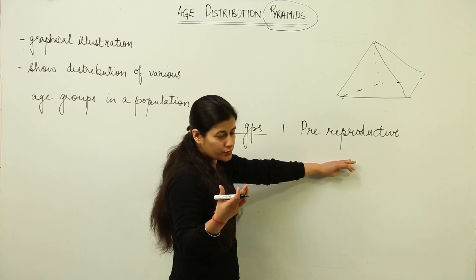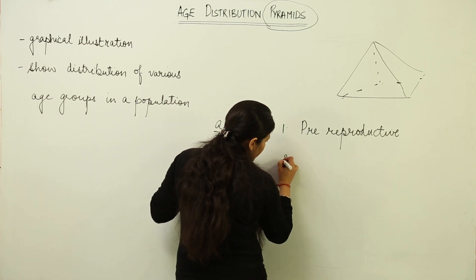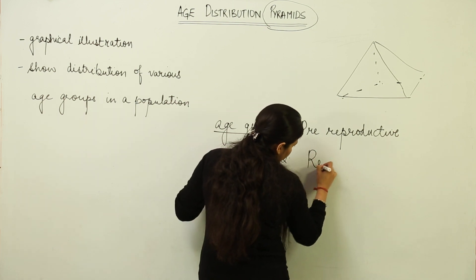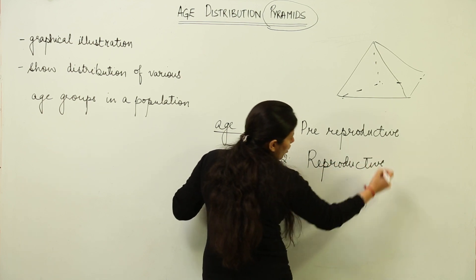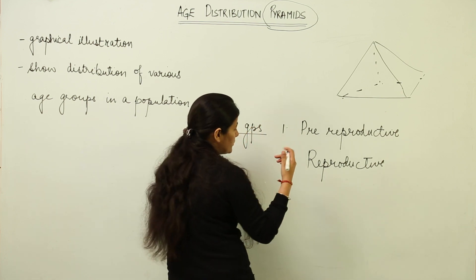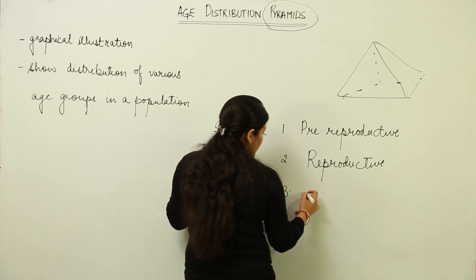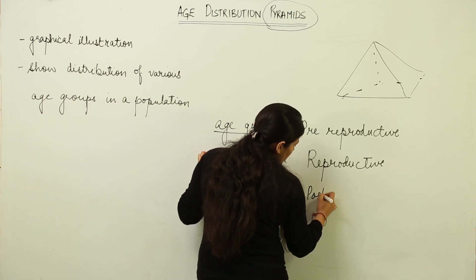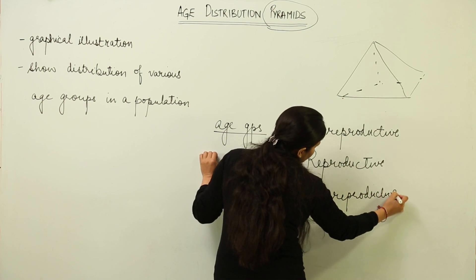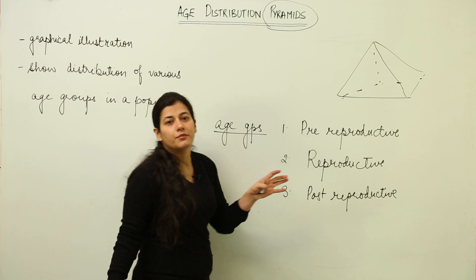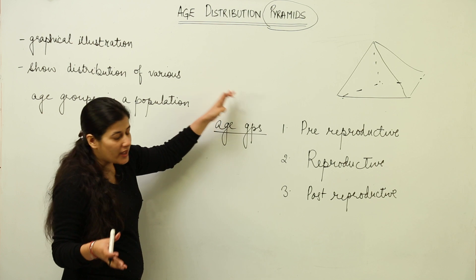Growth ultimately occurs through reproduction. The first age group is pre-reproductive, which includes children who have not attained the age of puberty. The second is the reproductive age, which represents the biotic potential of a given population — as discussed while studying carrying capacity. The third is post-reproductive. We will understand how these three age groups can be represented graphically.